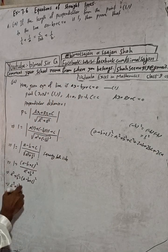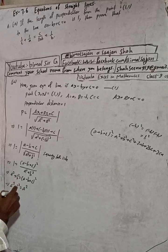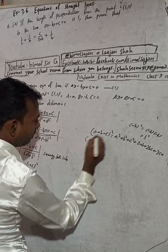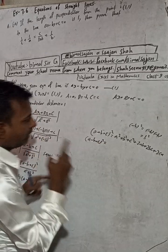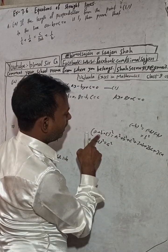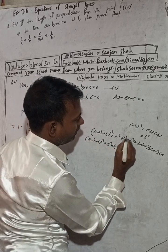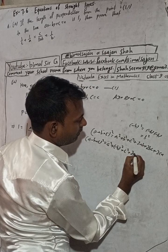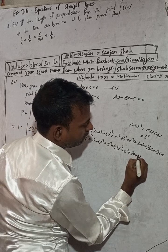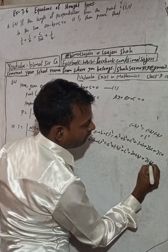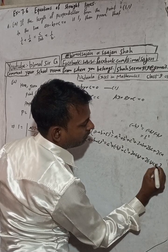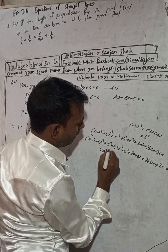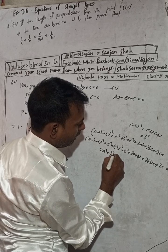So expanding (a minus b plus c)²: we have a² (since a is a), then plus b² (since b value is minus b, so minus b squared is plus b²), then plus c², then plus 2·a·(minus b) giving minus 2ab, then plus 2·(minus b)·c giving minus 2bc, then plus 2·c·a giving plus 2ca. Solving this gives: a² plus b² plus c² minus 2ab minus 2bc plus 2ca.